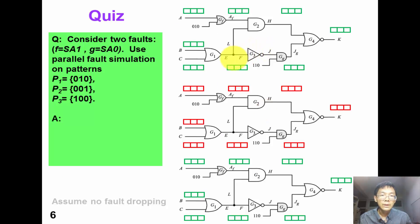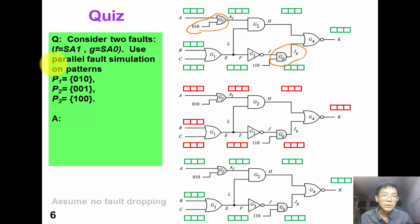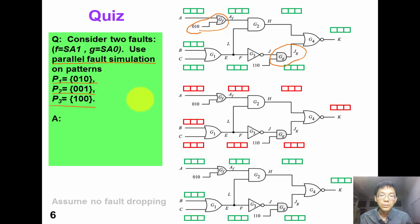Let's revisit our motivating problem. Given this circuit, consider two faults: fault F is a stuck-at-1 fault, and fault G is a stuck-at-0 fault. Please use the parallel fault simulation technique to apply three patterns: P1 is 0-1-0, P2 is 0-0-1, and P3 is 1-0-0. Find the faulty response and determine which faults are detected. Please pause the video and work on this problem now.